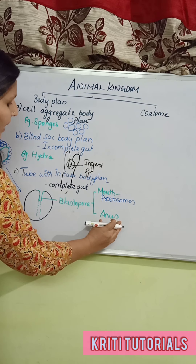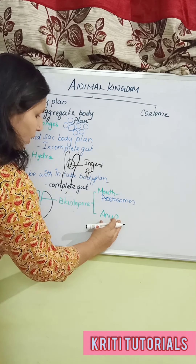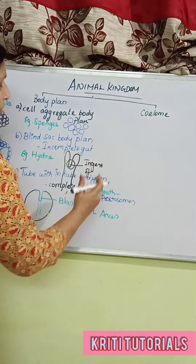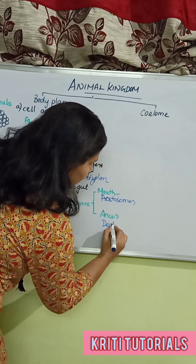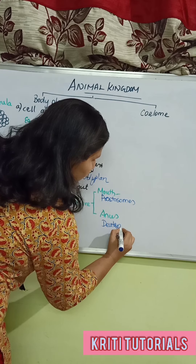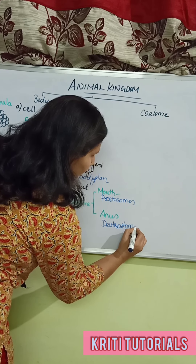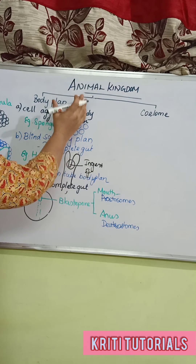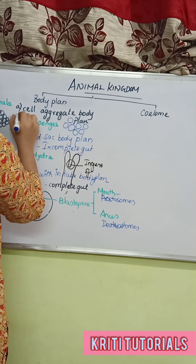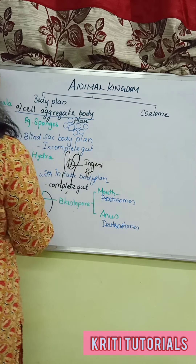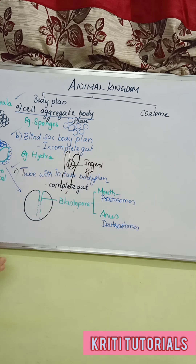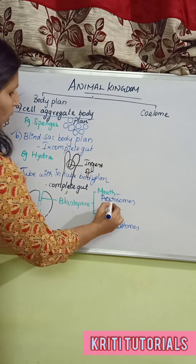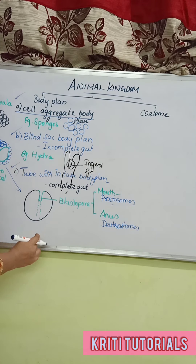If the blastopore develops into the anus first and the formation of the mouth happens later, this is called deuterostomes. So body plan consists of three types: cell aggregate body plan, blind sac body plan, and tube within tube body plan, along with protostomes and deuterostomes.